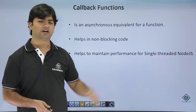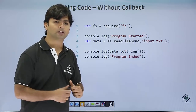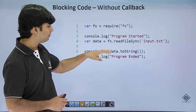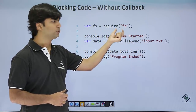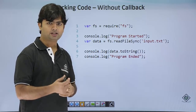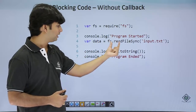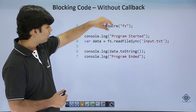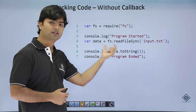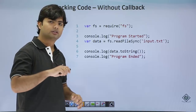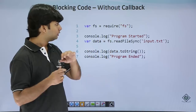Let's take an example where I have not implemented the callback. Here we are reading a file called input.txt and we've included the 'fs' module. This is synchronous programming — readFileSync. What will happen: first 'program started' will print, then the read operation will be done, then we'll print the data, then 'program ended'. But consider a scenario where reading a file takes some time.